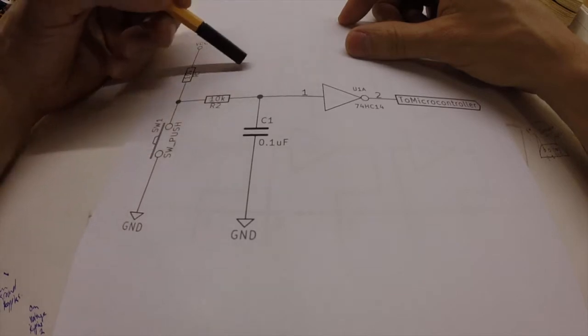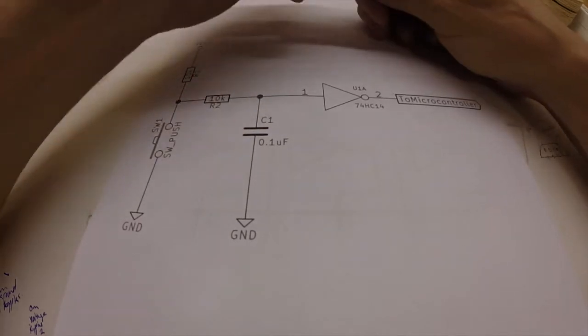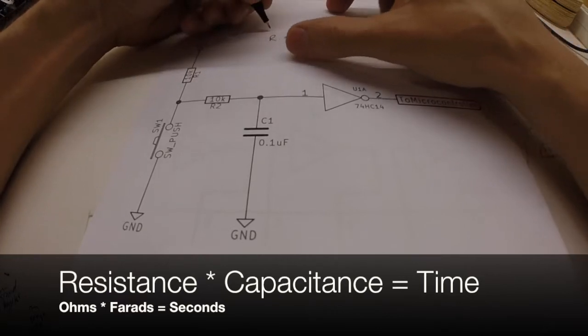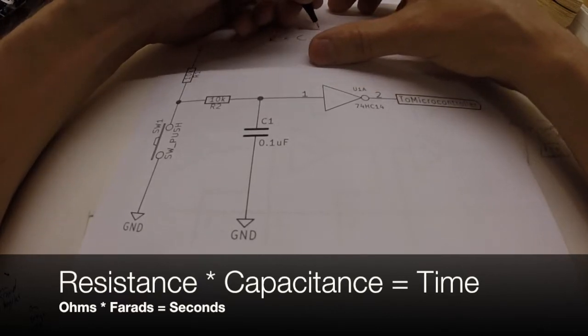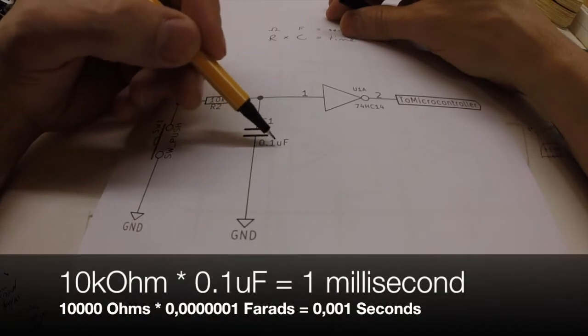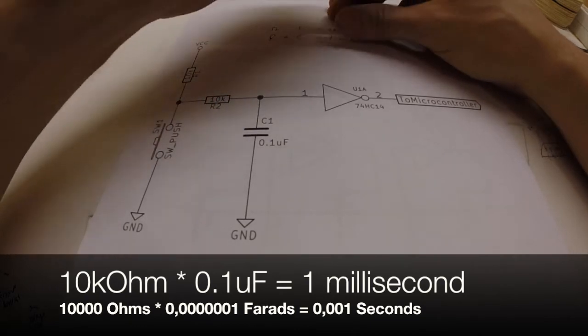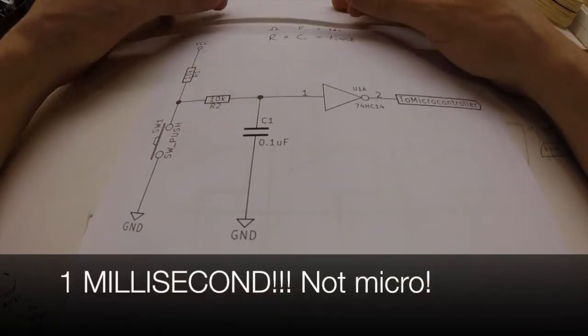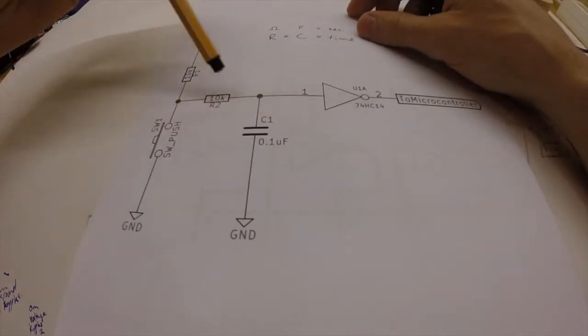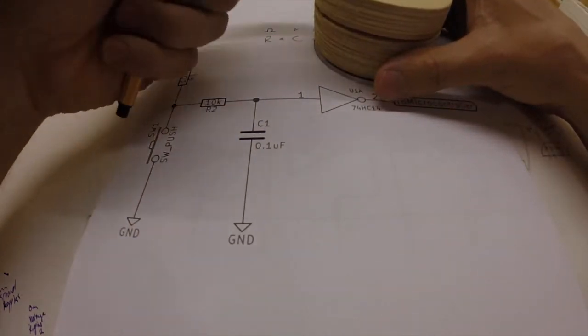And you get a slope. And the slope is you can calculate by R times C equals time in seconds. So R in ohms, C in farads equals time in seconds. So in this case 10k times 0.1 microfarad gives us a slope time of 0.001 second. So one millisecond slope and that should really be enough. We don't turn this that fast I think.